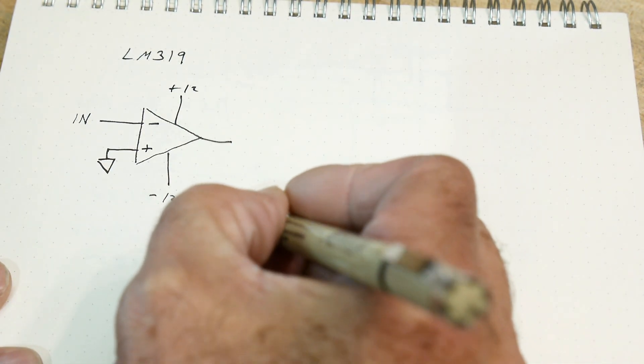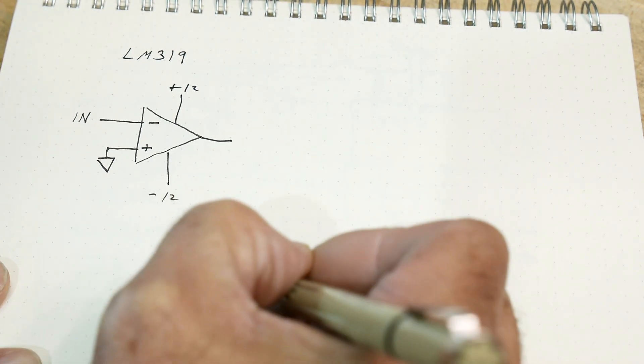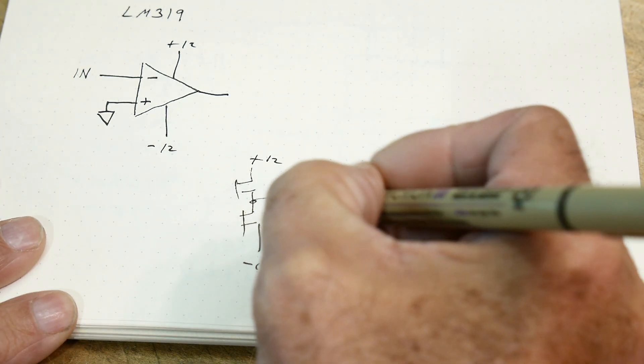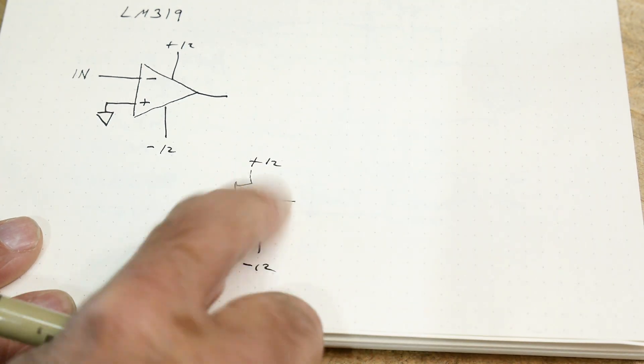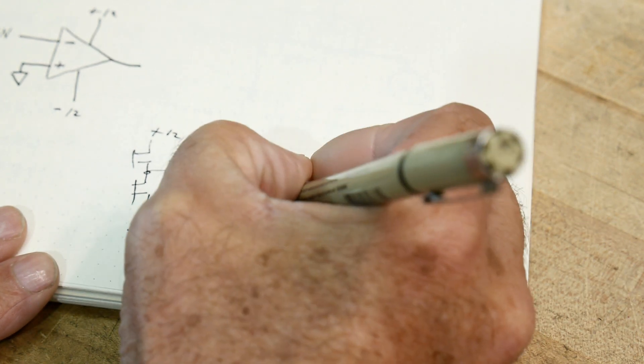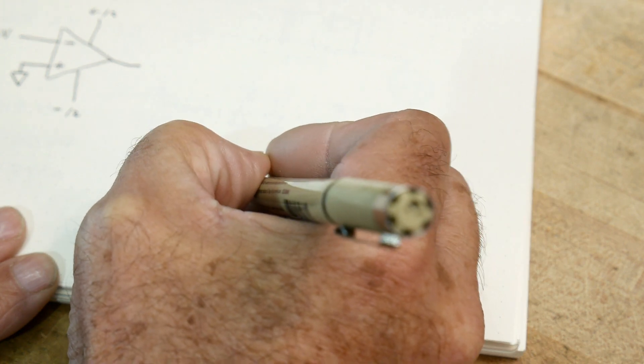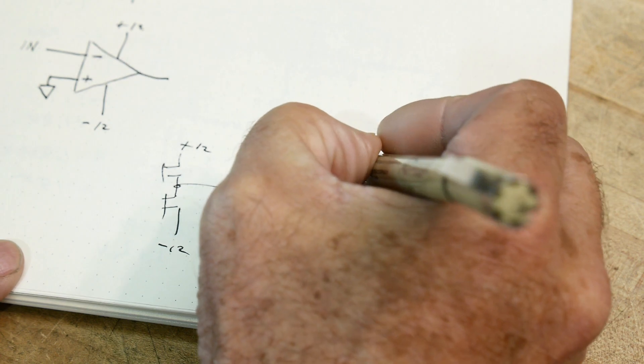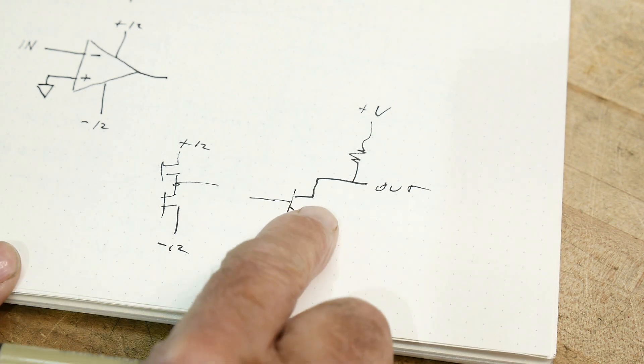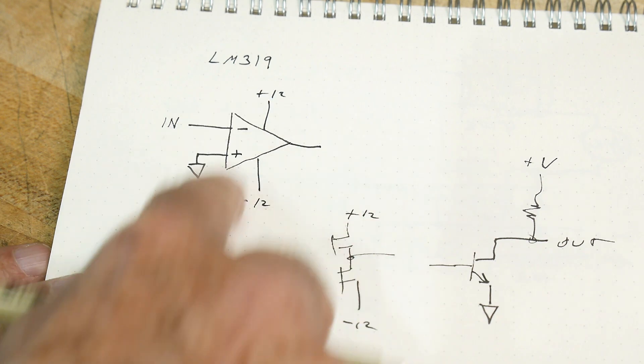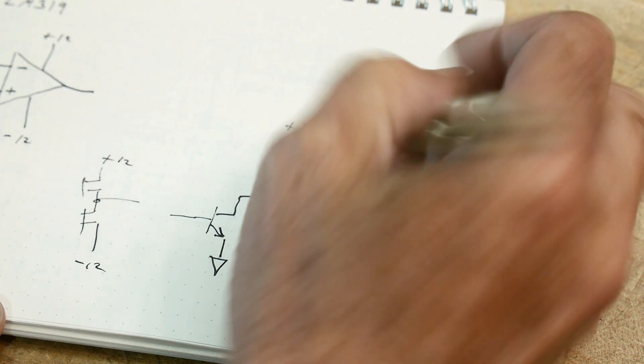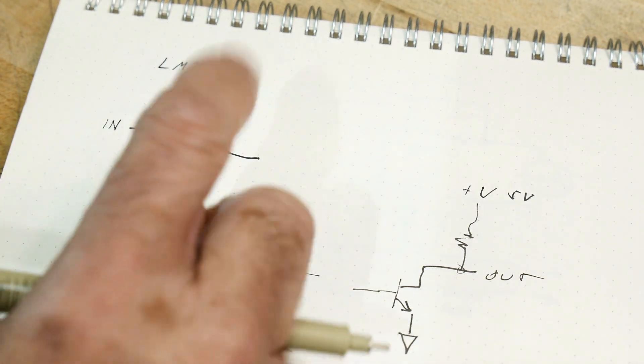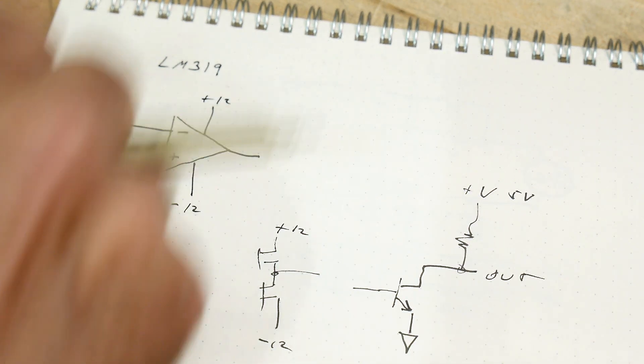The other thing about comparators is they're usually open collector output. And what does that mean? Well, in a lot of devices that people are used to, the output looks something like this. And so the transistor can pull it high and transistor can pull it low. Whereas an open collector, these are actually bipolar, the output looks like this. This is the out. And it allows you to put your own pull-up. It requires a pull-up. You have to have a pull-up to some voltage. And that voltage can be anything. So like in this system where we have plus or minus 12, we could actually tie this to 5 volts. And then the output would swing between 0 and 5 volts, which would be great to run into some logic gates. So a lot of times these comparators are used to convert analog signals into digital signals. It's the one place where you can do level conversion.